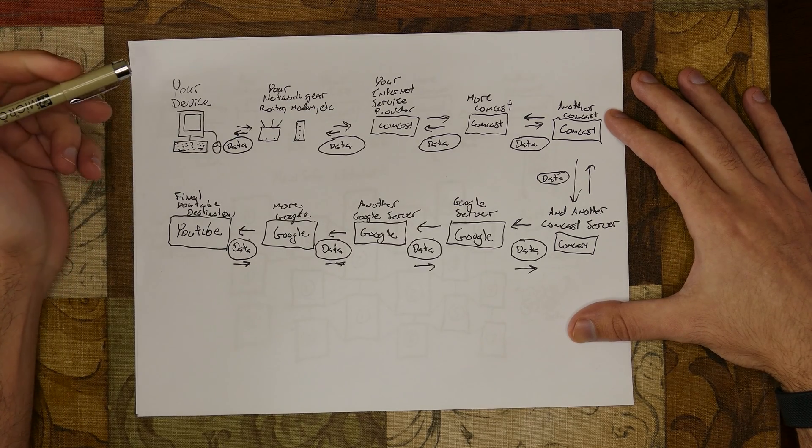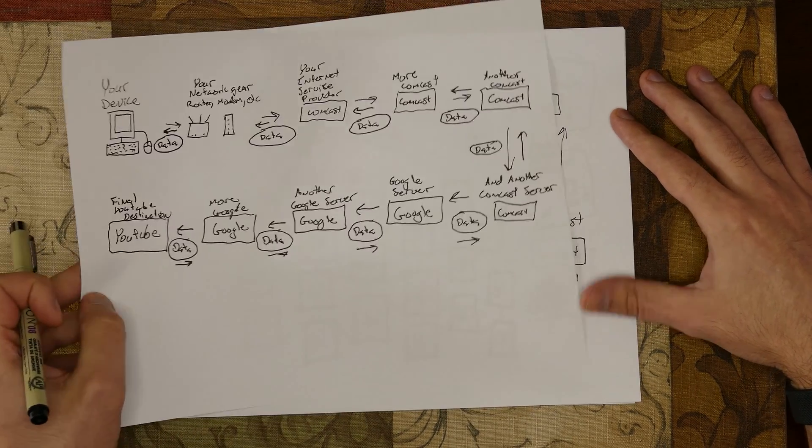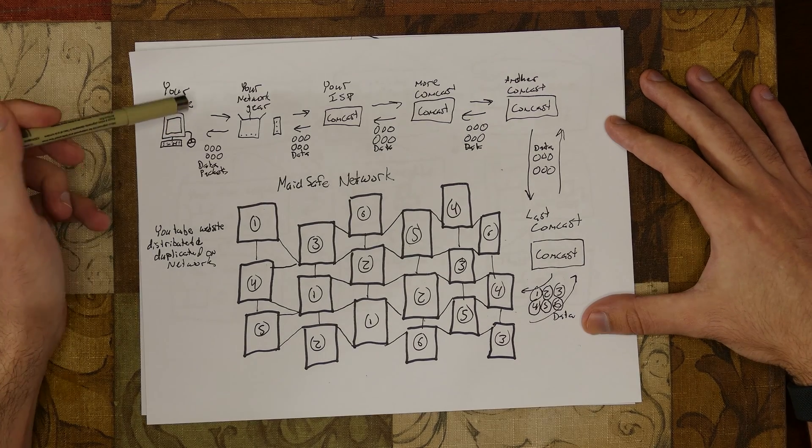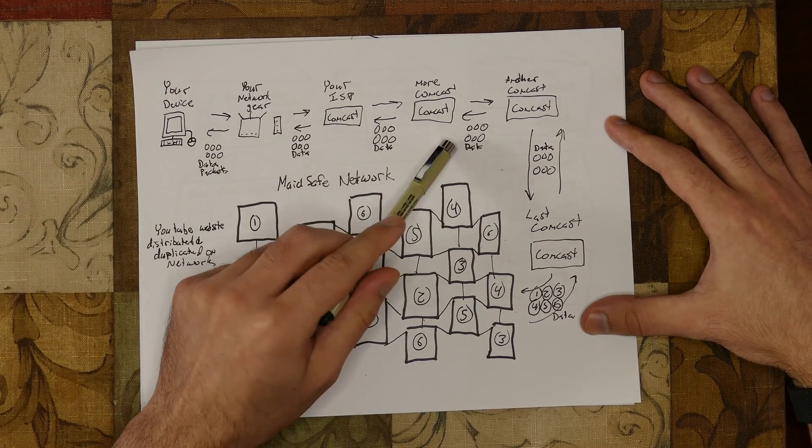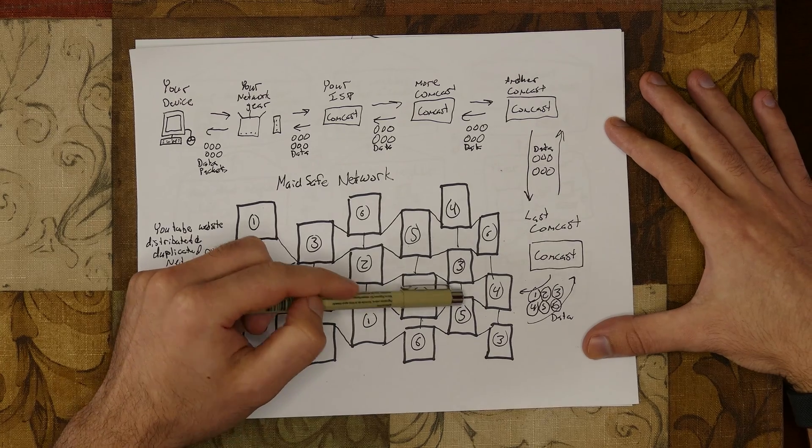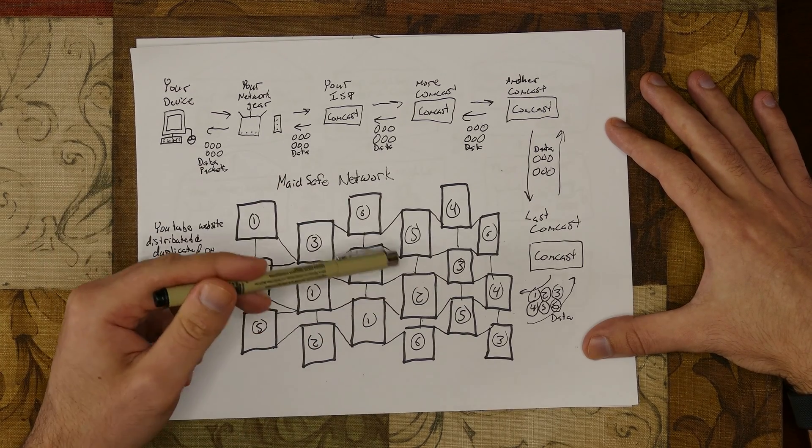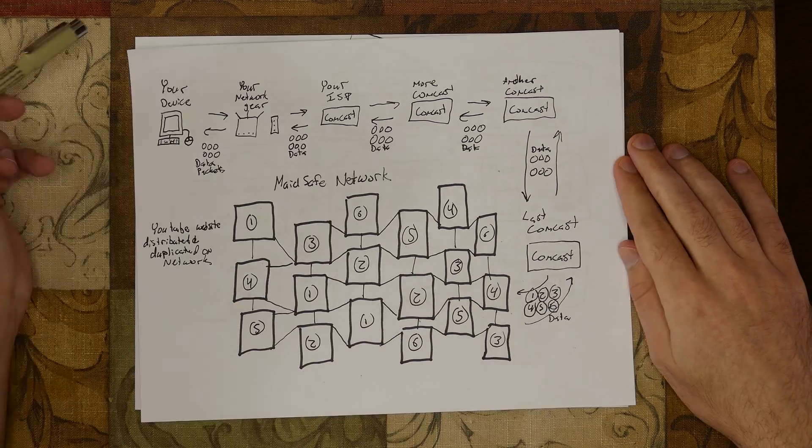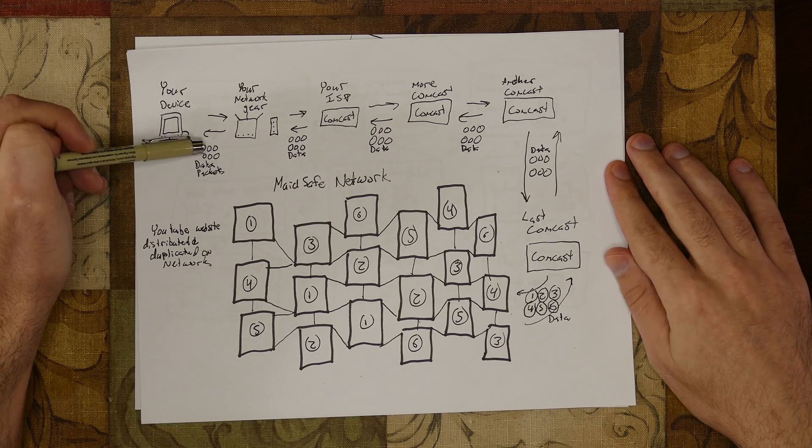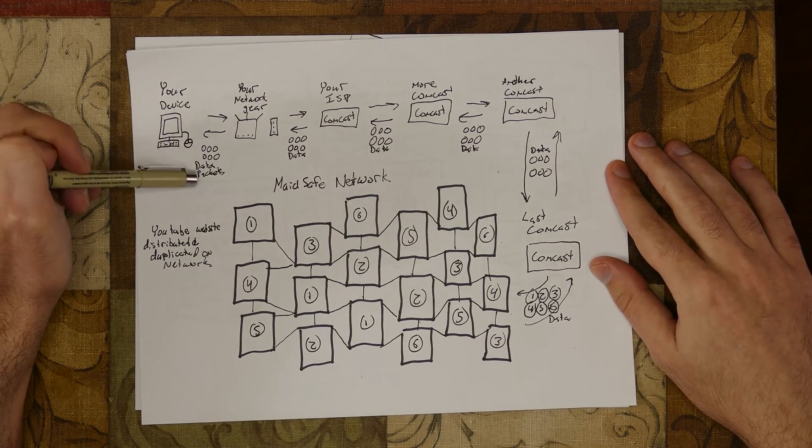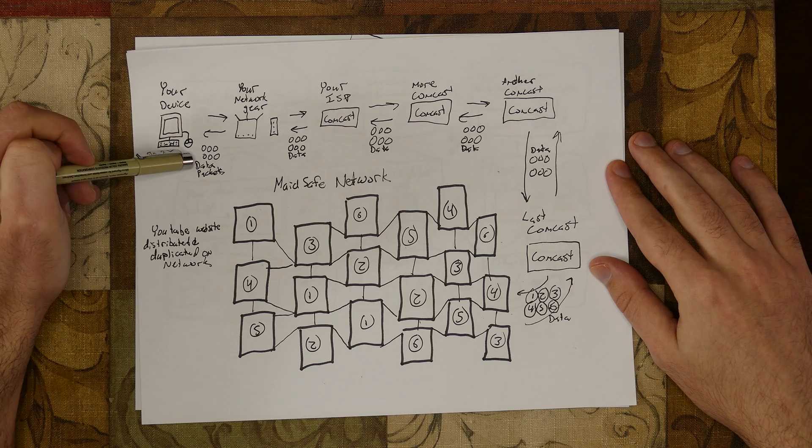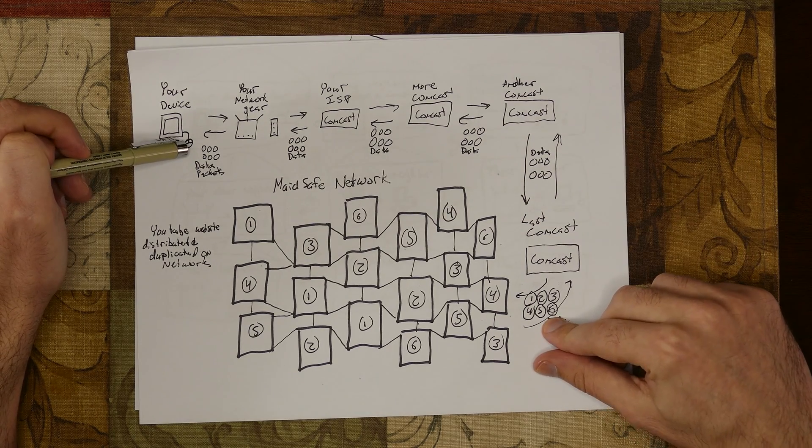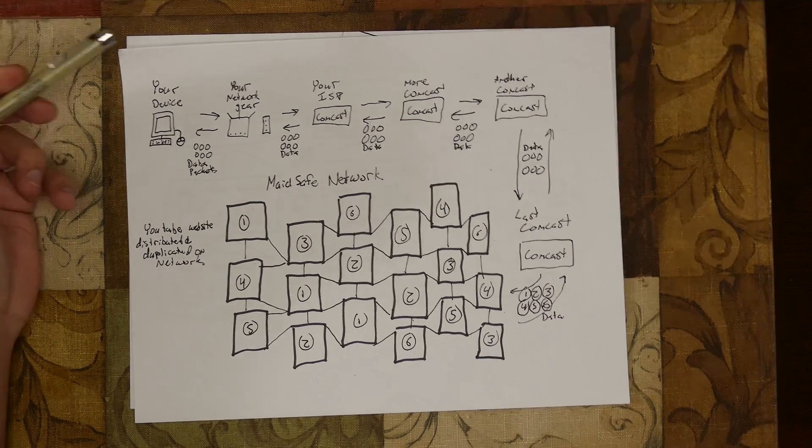MadeSafe solution only replaces these Google servers with something that looks like this. Your data follows the same path until it reaches a MadeSafe node, where it's split up and duplicated and distributed. For this demonstration, I'm splitting, duplicating, and distributing your data directly from your computer, but it may be done first when it hits the MadeSafe node. I'm not sure which happens in practice.